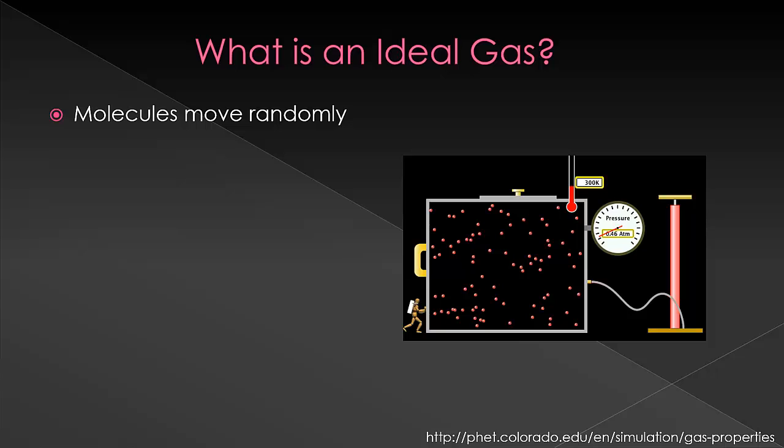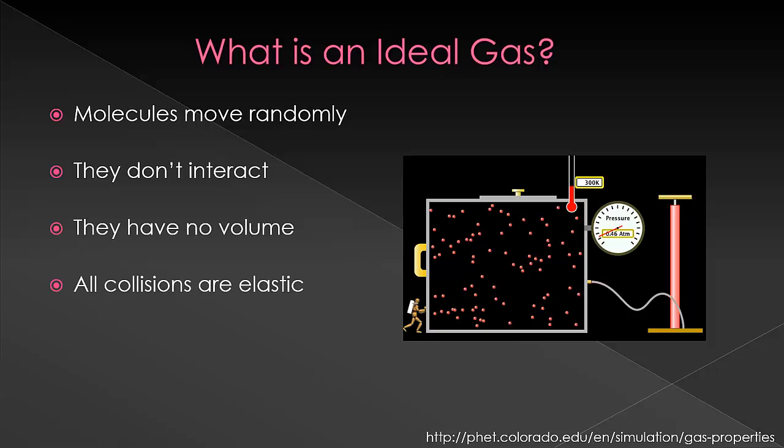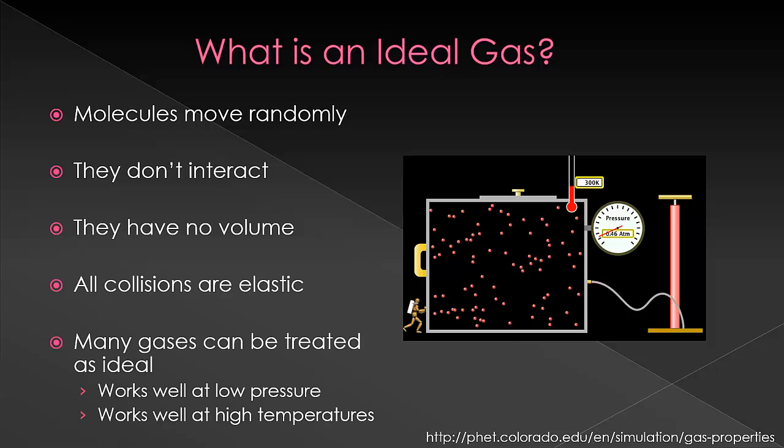So for an ideal gas, we're going to assume that molecules move completely randomly, that they don't interact with each other, and that they have no volume. We're also going to assume that if two particles collide, those are completely elastic, meaning that no energy is lost to that collision. The same amount of energy comes off as when it starts.